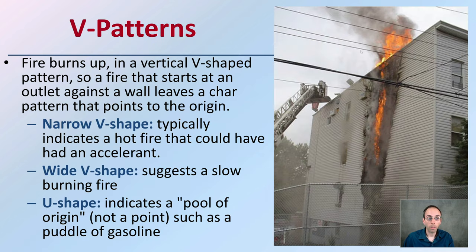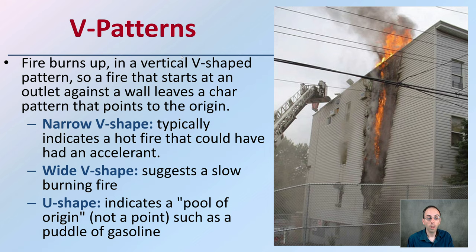There's also something called V patterns. As the fire burns up — as we see it actively burning on this image here on the side of the building — it burns in a vertical V-shaped pattern. A fire that starts at an outlet against a wall leaves a char pattern pointing to the point of origin. Narrow V-shaped patterns typically indicate a very hot fire that could have an accelerant added to it. A wide V-shaped pattern suggests a slow burning fire. And if there's a U shape, it indicates a pool of origin — such as a puddle of gasoline — rather than a distinctive point of origin.